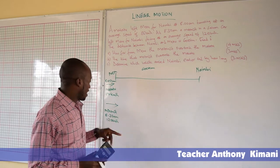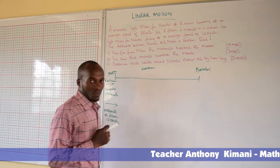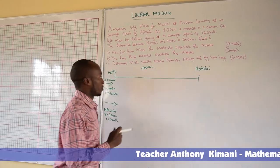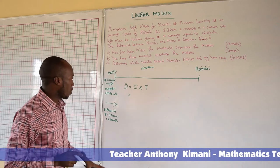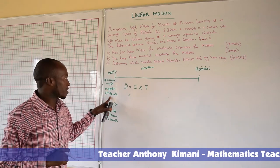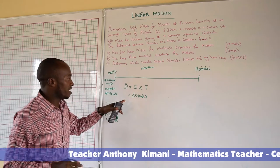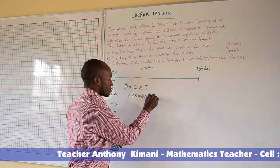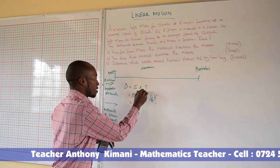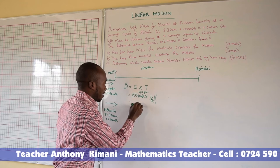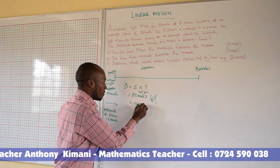So the distance travelled by the Matatu before the motorist started the journey — this is the relative distance or gap between the two. Distance equals speed times time: the distance of the Matatu is 80 km per hour multiplied by half an hour, which gives 40 km. So the Matatu covered 40 km before the motorist started the journey.